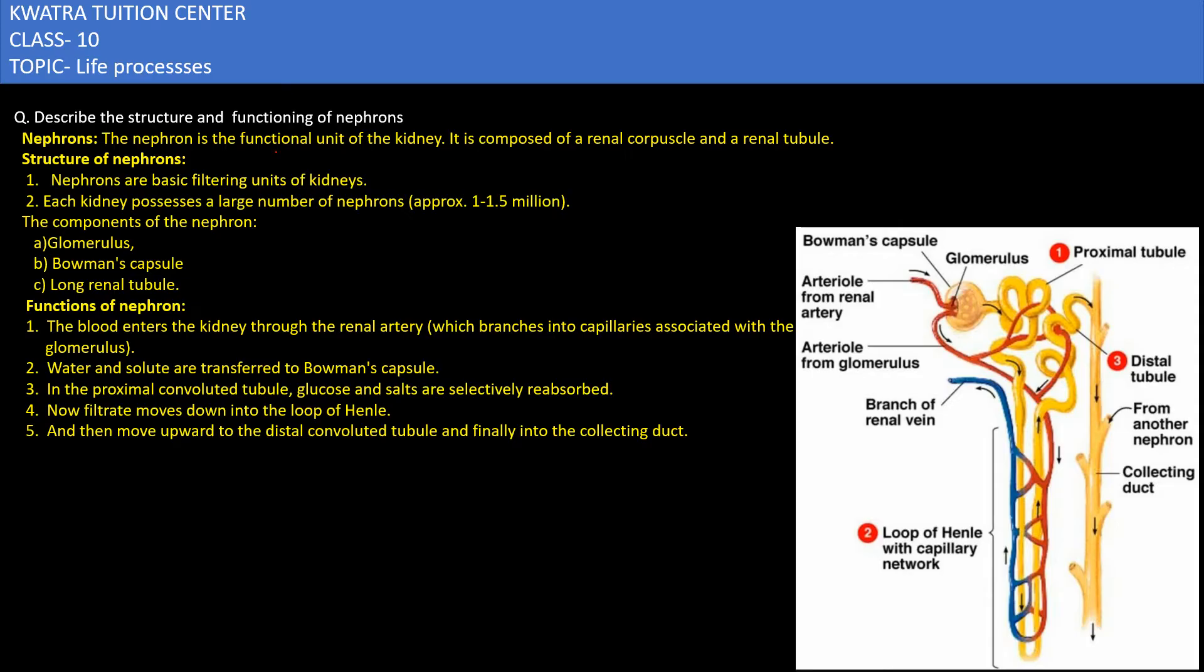Nephrons are functional units of kidneys and they are composed of renal corpuscle and renal tubule. Moving towards the structure of nephrons, nephrons are the basic filtering units of kidney. In the kidneys there are a lot of nephrons present in large numbers. There are about 1 to 1.5 million nephrons which a kidney possesses.